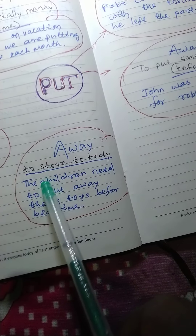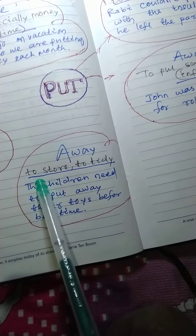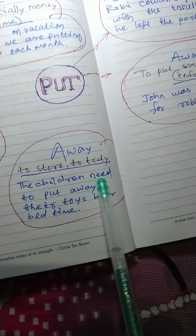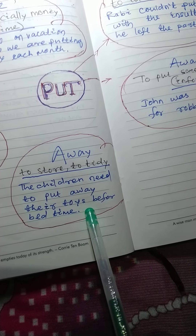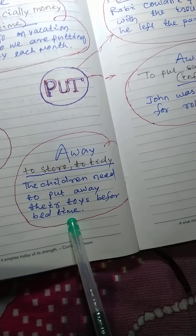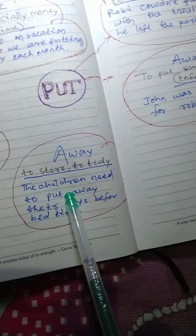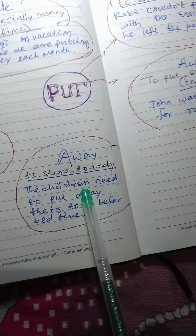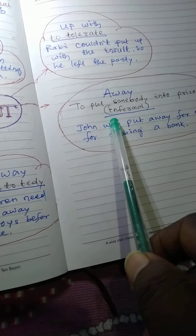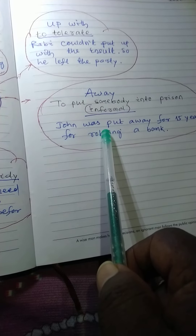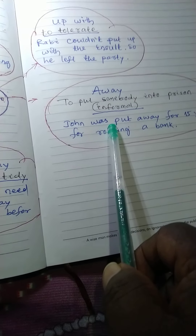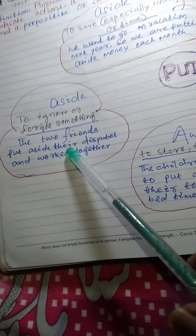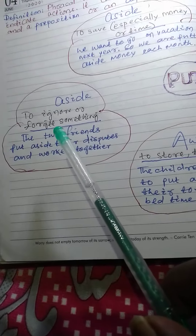This phrasal verb means to store or to tidy. Example: The children need to put away their toys before bedtime. This meaning is to keep something away and safe. But the other meaning of 'put away' is to put someone in prison — that is the difference.